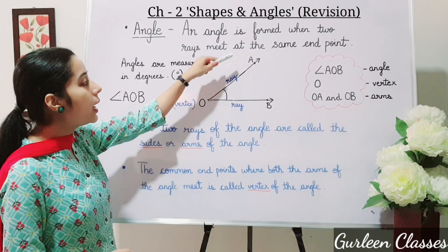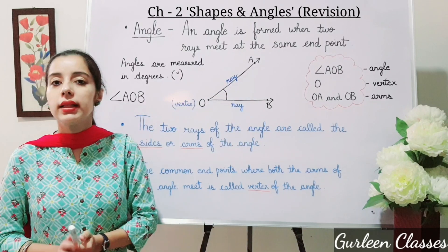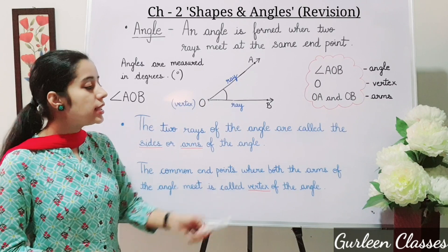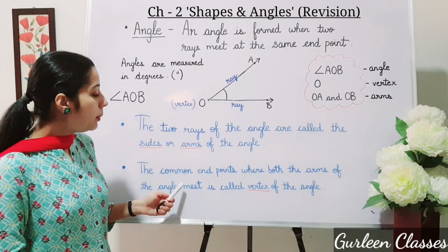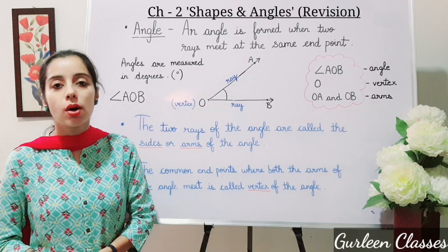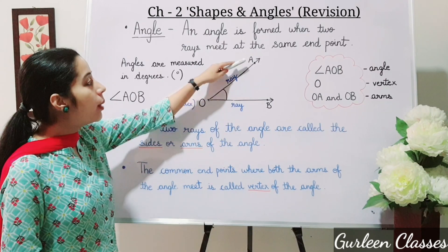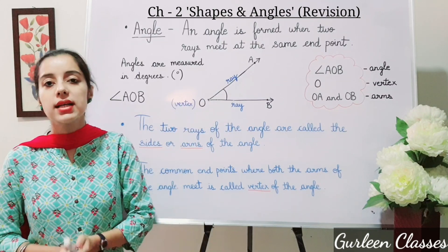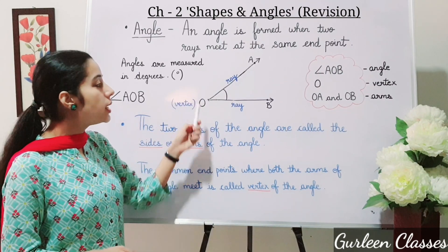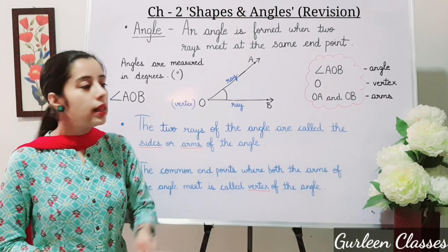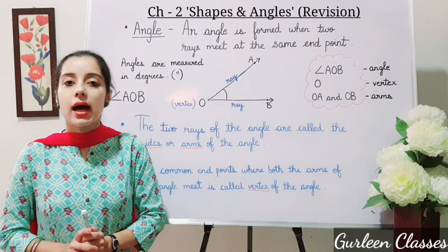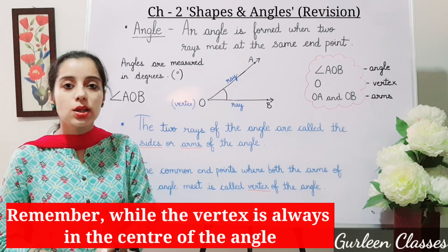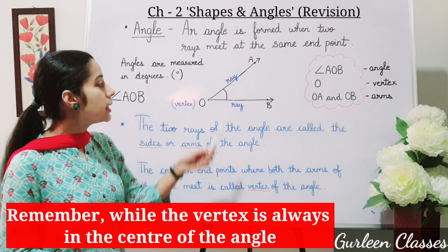Here, OA and OB are the arms of the angle. Next, the common endpoint where both the arms of the angle meet is called the vertex of the angle. Here you can see both the arms meet at the common point — that is known as the vertex. So here, point O is the vertex of angle AOB. Remember, whenever we write the vertex of an angle, it is always in the middle.